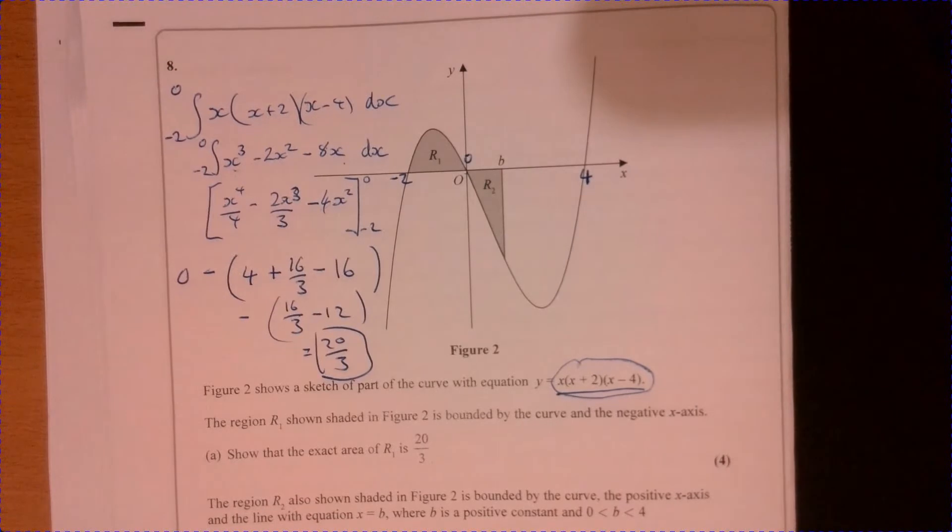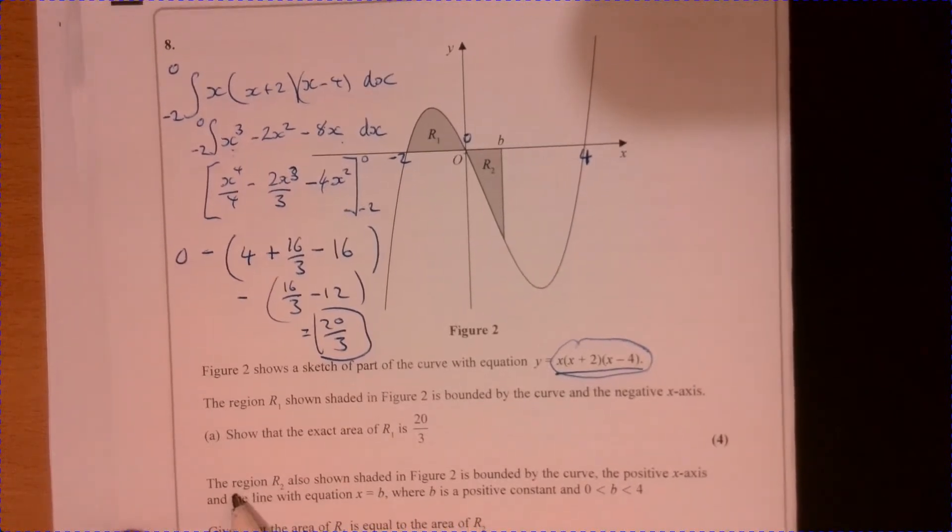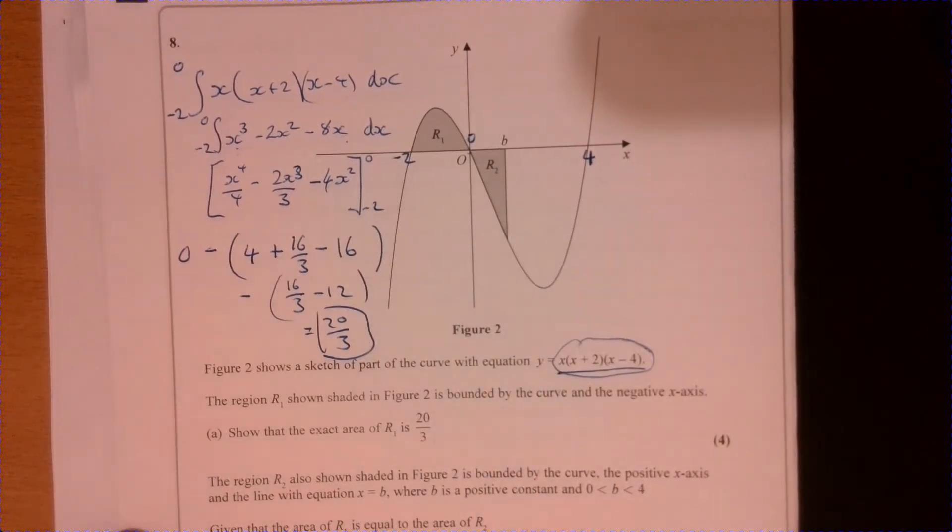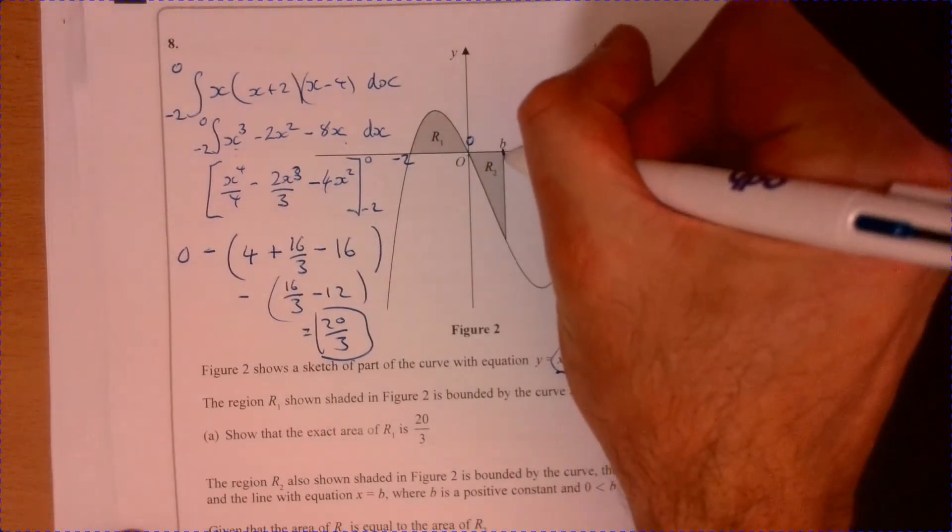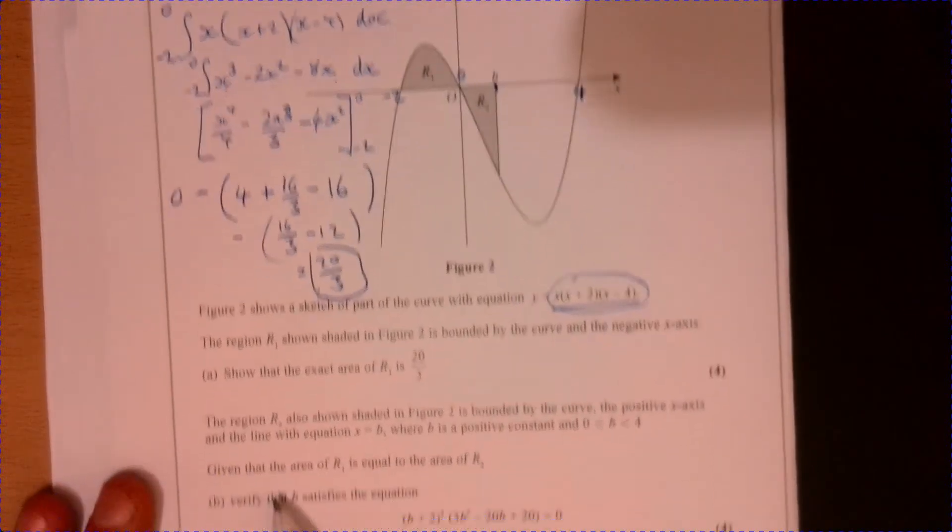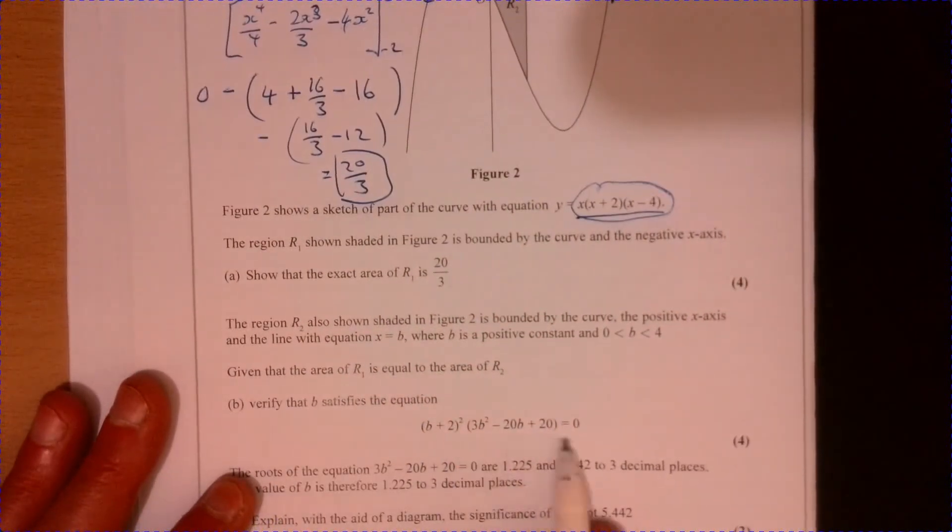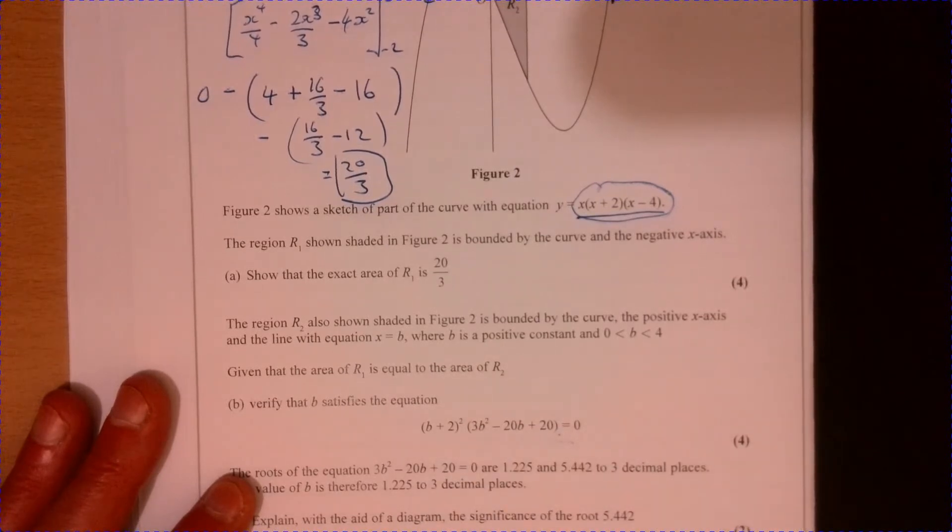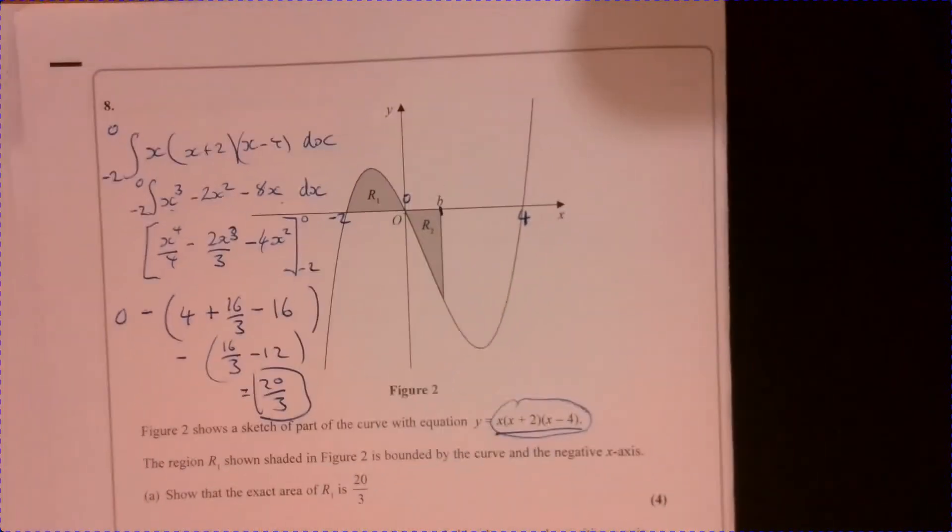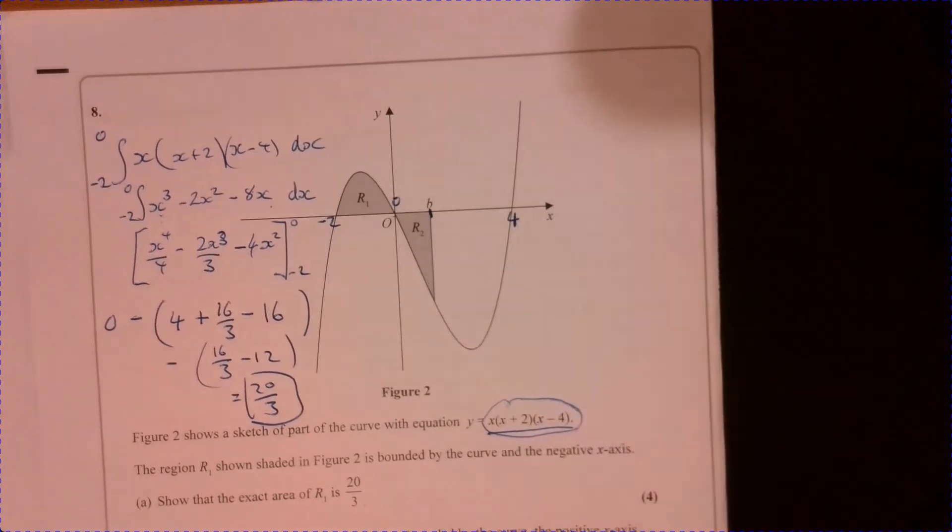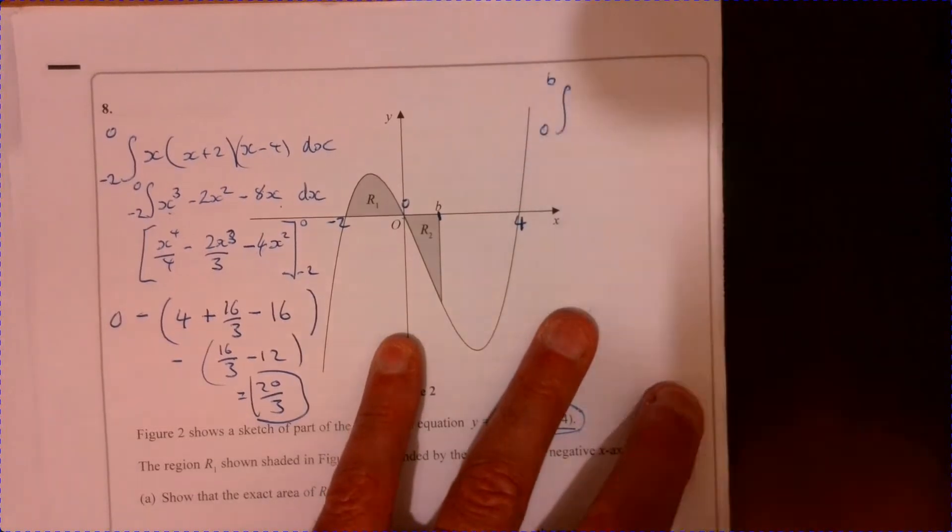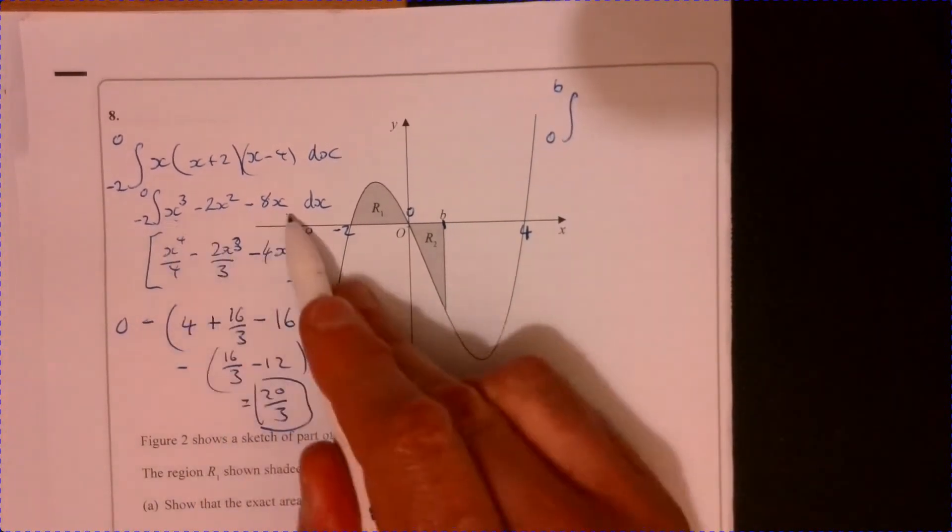Next part of the question. It says the region R2, also shown shaded, is bounded by the curve. So the question is, we've got to work out what this B thing is. Actually, if you look down at the question, it's saying we need to prove this thing here, we need to show that it's this. So what it's asking us to do, I think I'm going to need a little bit more room for this. I might just try and squeeze my question just up here. Remember, you've got lots more room on yours.